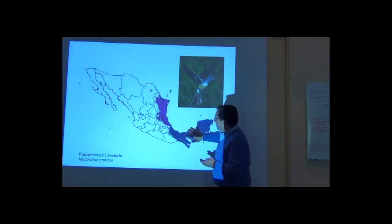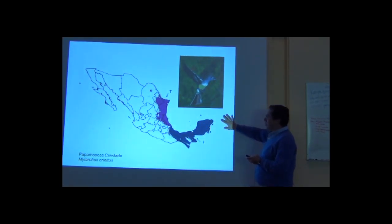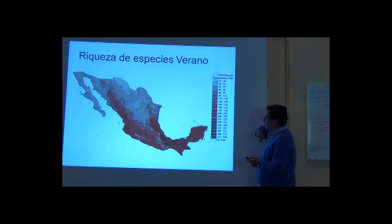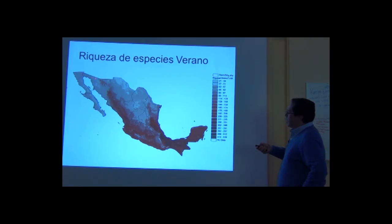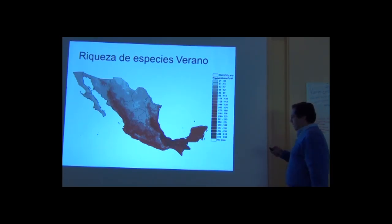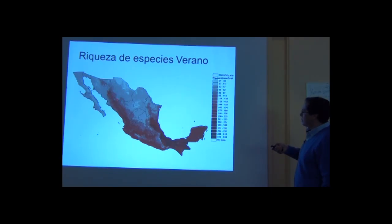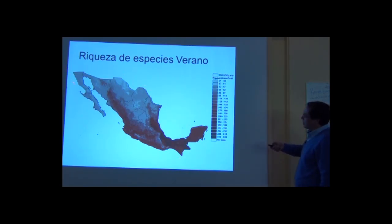Once you have this group of maps, you are able to recover the different patterns of species richness according to different questions we want to ask. The first question is: how many species do we have? We have maps that depict the summer distributions of all the species present in summer, and then we make a sum of maps to generate a surface depicting species richness during summer.